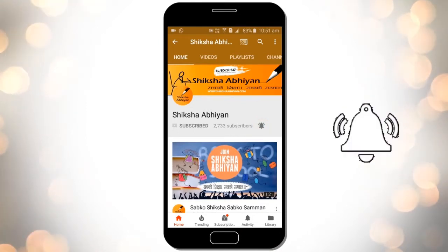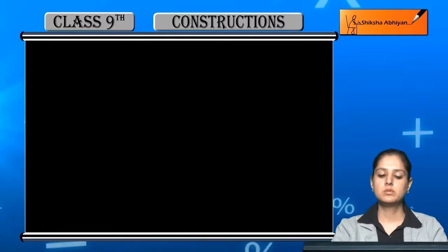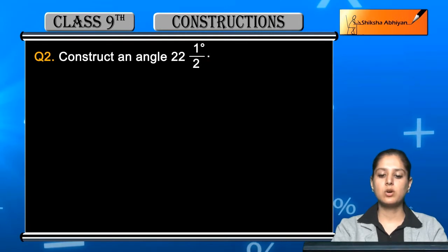Question number two: Construct an angle of 22 and a half degrees. To construct this angle, you should know that 22 and a half degrees is half of 45 degrees.